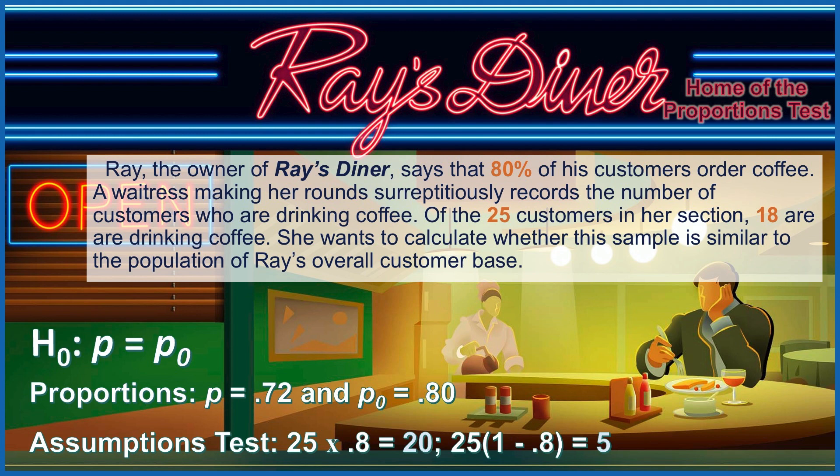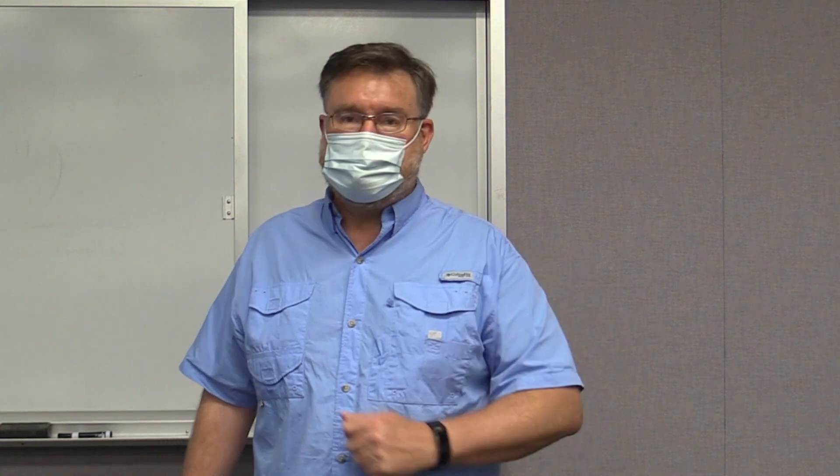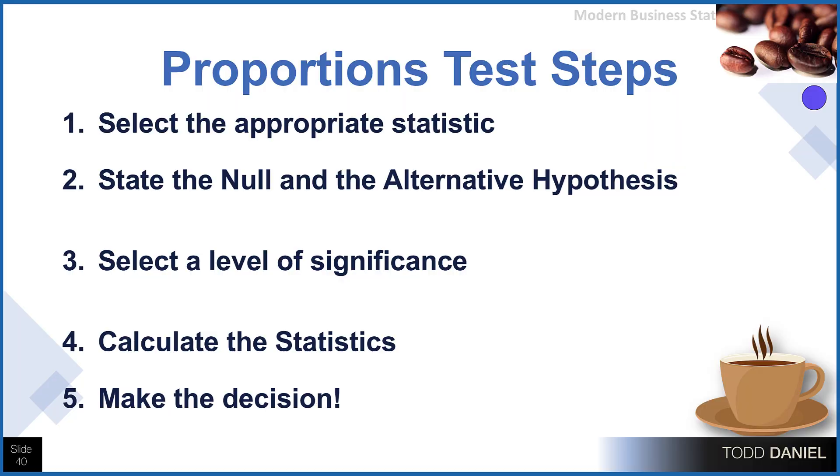Let's walk through our five steps of hypothesis testing. We have one sample, which has a proportion. We have a population with a known proportion. This is the setup for doing a proportion test.